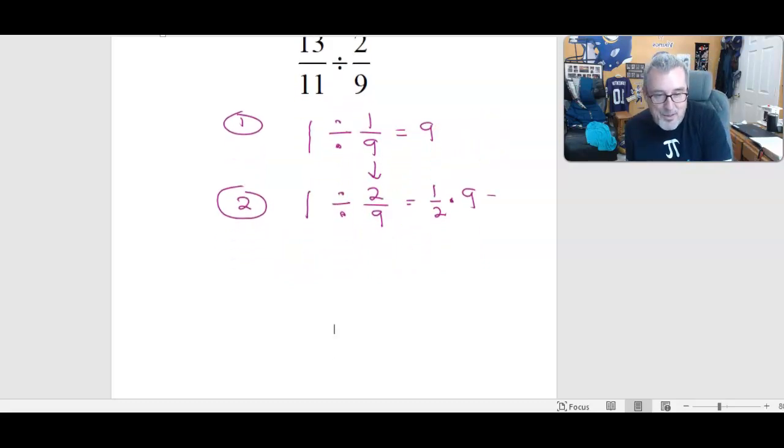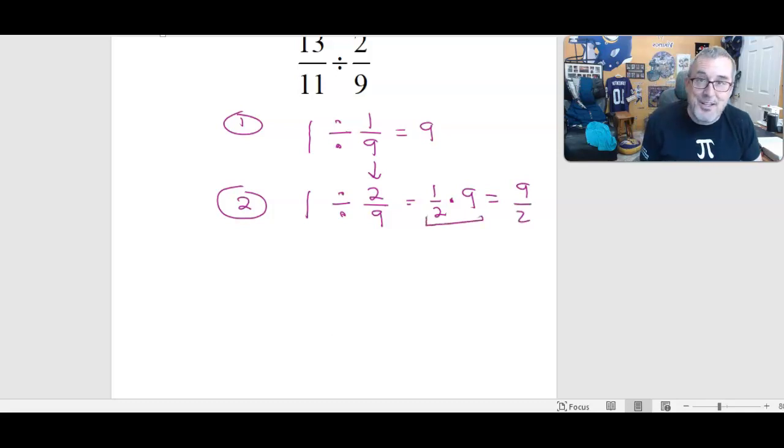Alright, now yeah, I know I can multiply this and get 9/2, and that's fine too. But I like to kind of keep it in this stage as well. Alright, now, I don't have 1. I have 13/11. Let's see what that is. So 13/11 is 13 copies of 1/11.